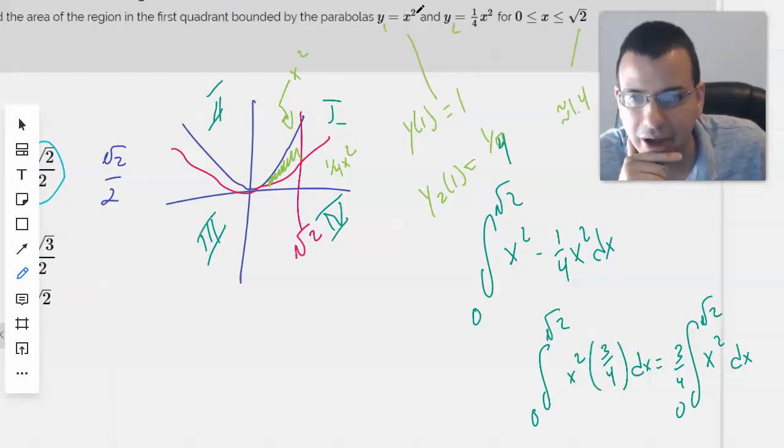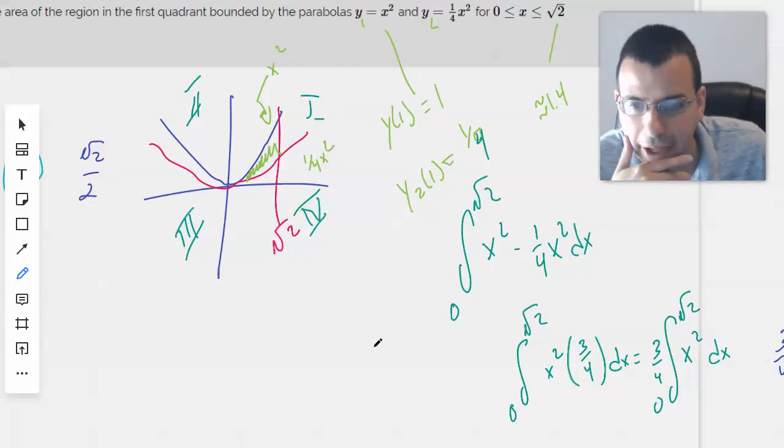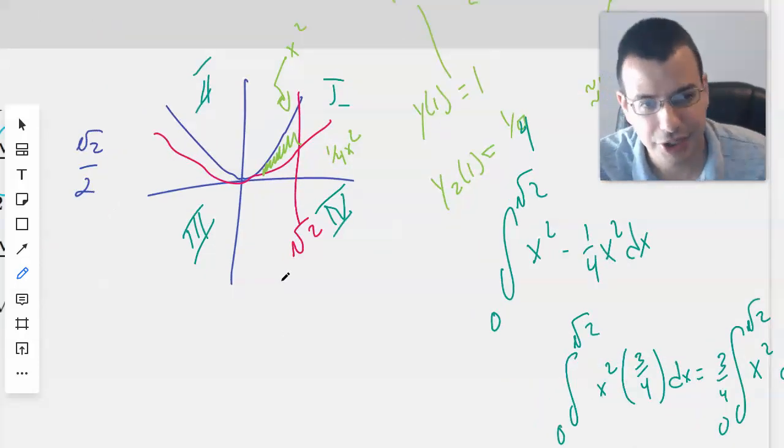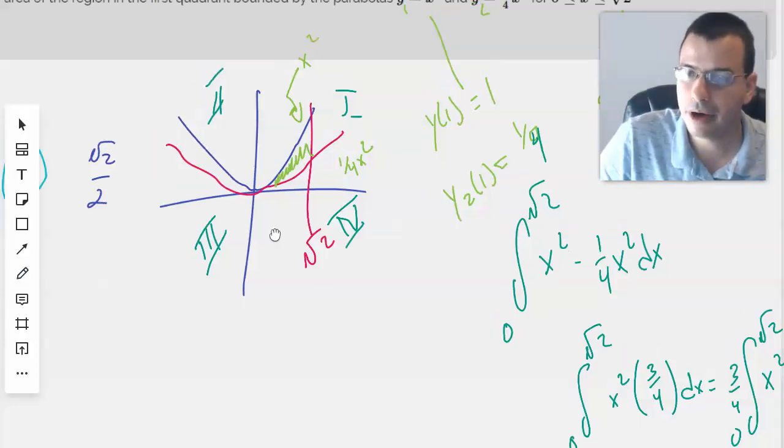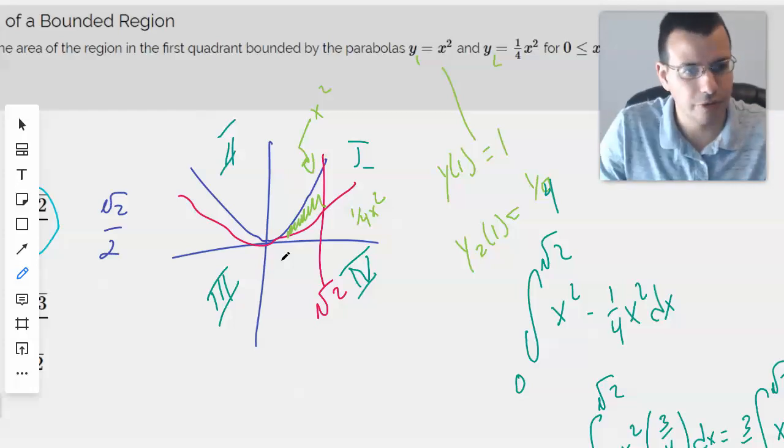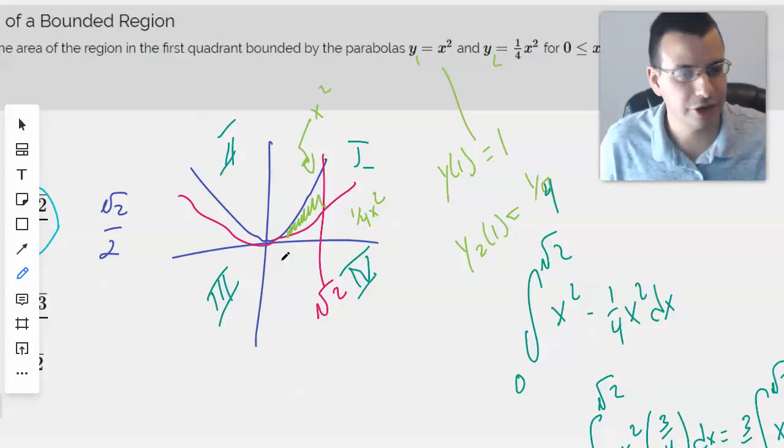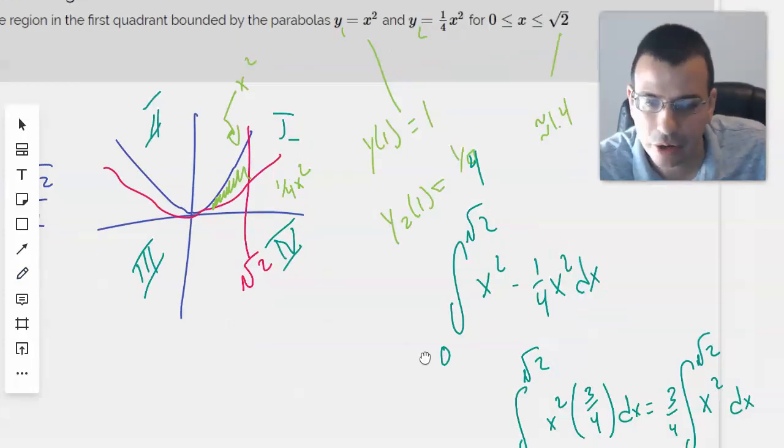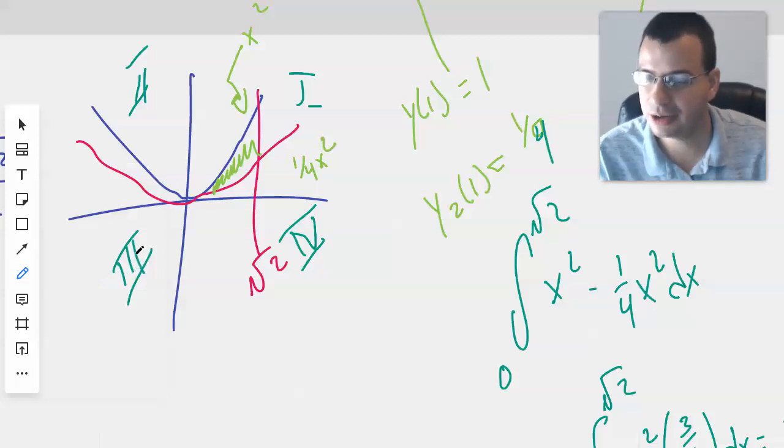So we wanted to find the area of the region, check. First quadrant, check. Bounded by x squared, check. Zero to square root of two, yeah. So the idea here is, first thing you do is you draw the problem out. You can graph this on your calculator. It won't take that long and it's probably worth it. But it's hit or miss. If you feel really confident, go for it without drawing it. If you have a little bit extra time and you're a little bit uncertain, definitely take your calculator out and graph it, assuming you're allowed to.